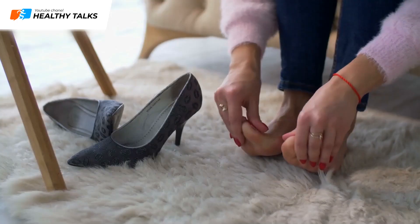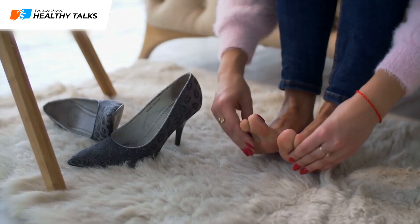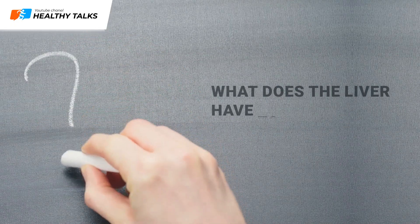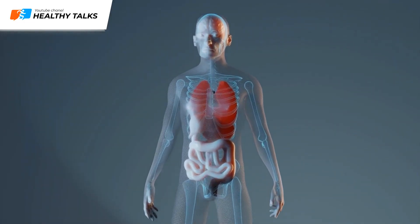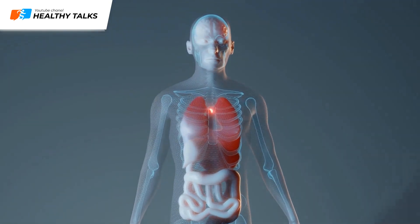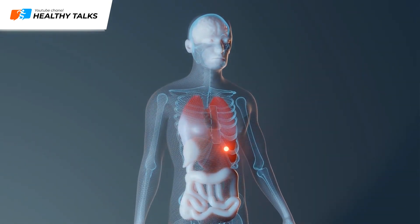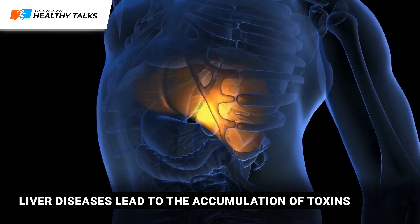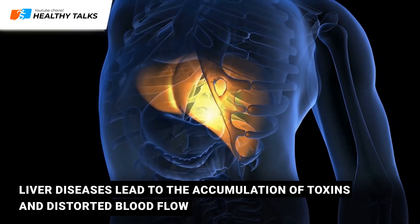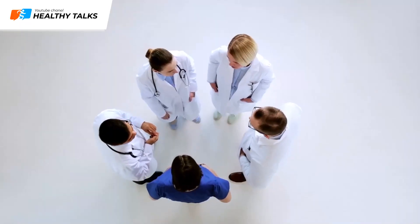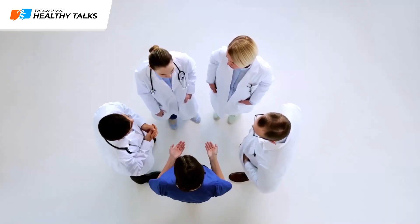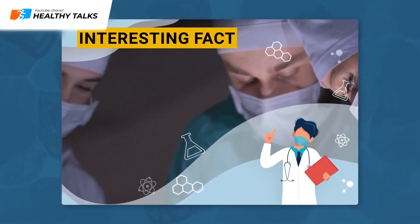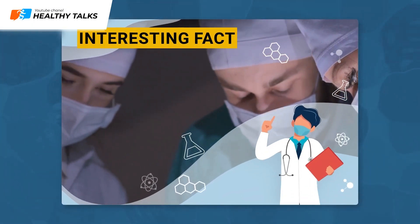Because of this, sweat gets an unpleasant smell, and first of all it is the legs that begin to smell unpleasant. You may ask what the liver has to do with it — all our organs are closely interconnected. Liver diseases lead to the accumulation of toxins and disruption of blood flow, which ultimately affects both kidneys and the rest of the organs.